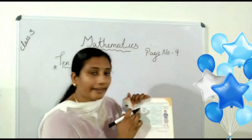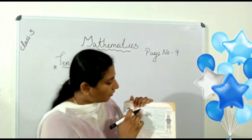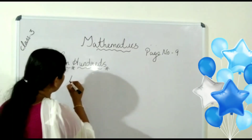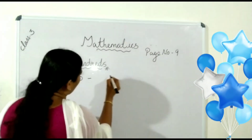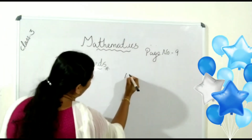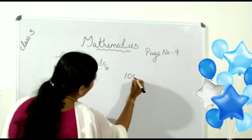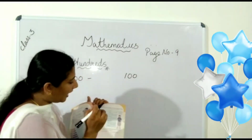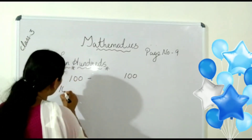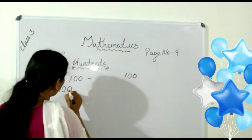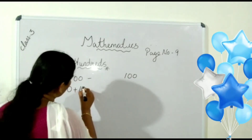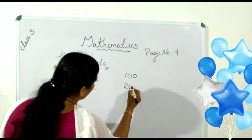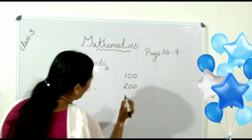Children, look at the textbook. 100 and 100 make? Yes, 100 and 100. Then, 200. What about 200? 100 plus 100 is equal to 200.